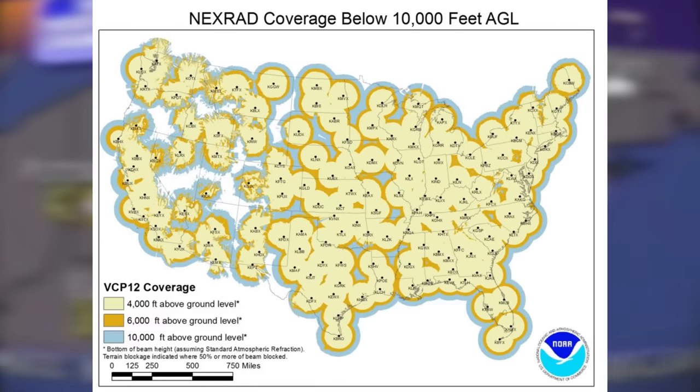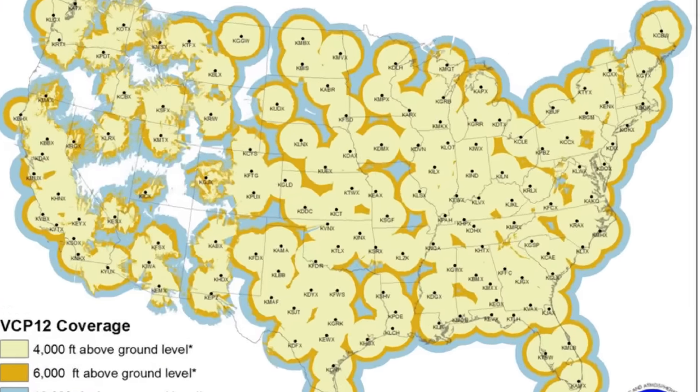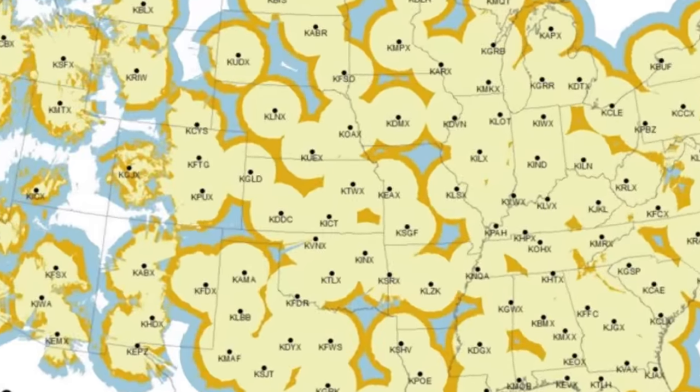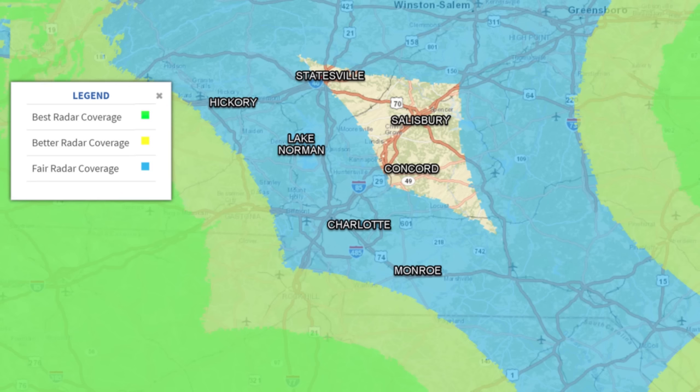There are many rural areas in the United States that have significant radar gaps that actually experience tornadoes quite often. But Charlotte, North Carolina might be the biggest U.S. city that has a significant radar gap. The closest radar is located 80 miles away in Greer, South Carolina.